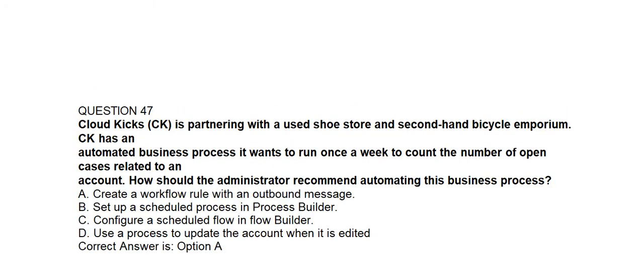Question number forty-seven. CloudKix has an automated business process it wants to run once a week to count the number of open cases related to an account. How should the administrator recommend automating this business process? Option A: Create a workflow rule with an outbound message. Option B: Set up a scheduled process in Process Builder. Option C: Configure a scheduled flow in Flow Builder. Option D: Use a process to update the account when it is edited. Correct answer is Option C: Configure a scheduled flow in Flow Builder.